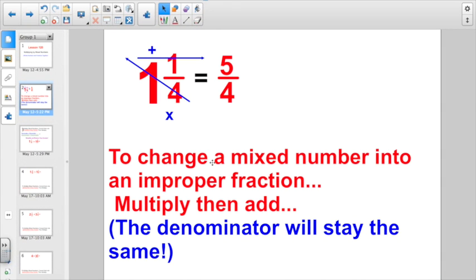Remember, to change a mixed number into an improper fraction, multiply, then add. The denominator will stay the same. If you had 1 and 1/4, you're going to start at the denominator of 4. Multiply that times the whole number. 4 times 1 is 4, plus 1 more makes 5. The denominator stays the same. 1 and 1/4 is really equal to 5/4, as an improper fraction.